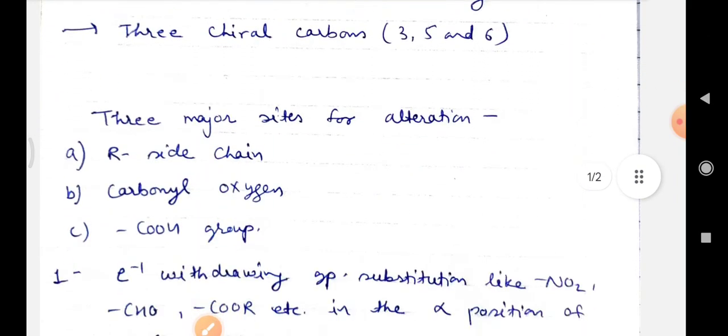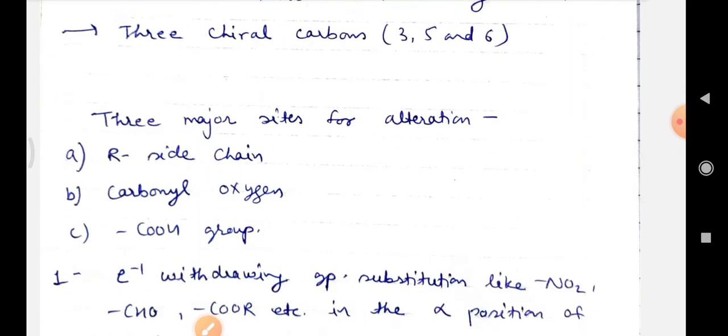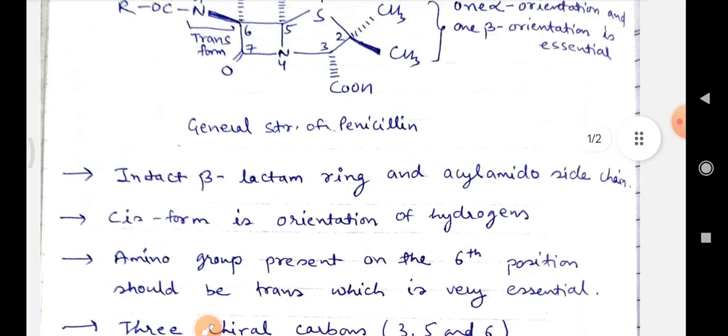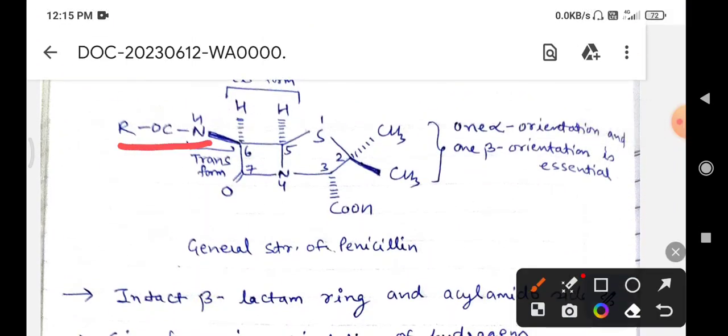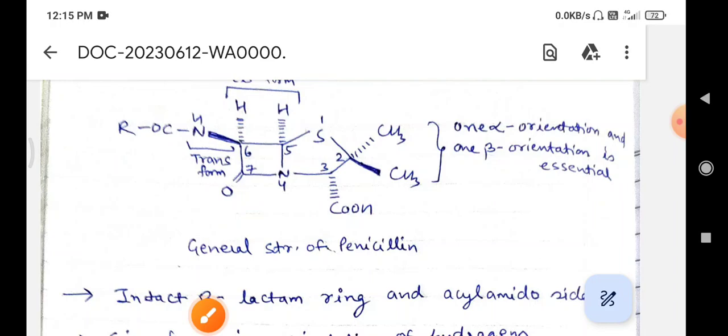But there are three major sites of alteration: the R side chain, the carbonyl oxygen, and the COOH group. Let's discuss them one by one.